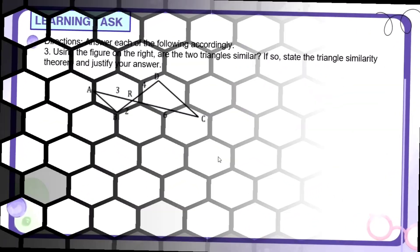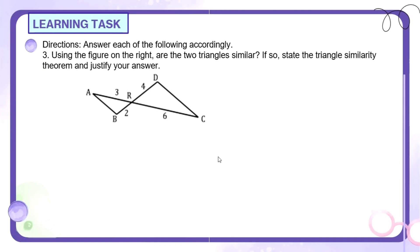Next, number three. Using the figure on the right, are the two triangles similar? If so, state the triangle similarity theorem and justify your answer. Okay? So we can see two triangles here and sasabihin natin kung sila ba ay similar. So let's write down the corresponding parts of our triangle. So we have segment AR over CR is equal to segment BR over DR.